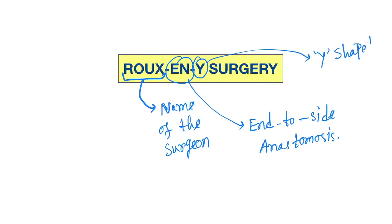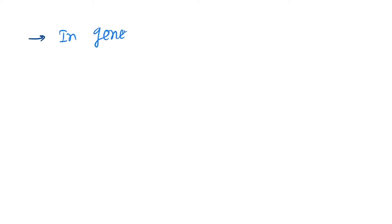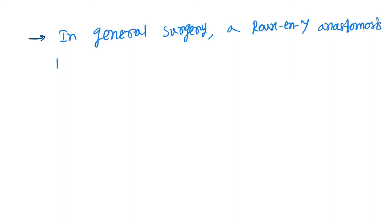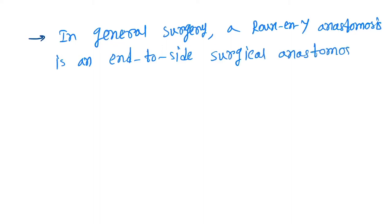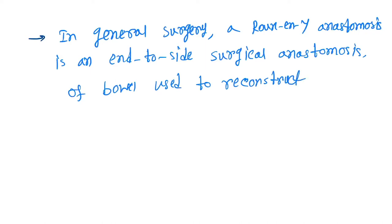Now let's write down the definition. In general surgery, a Roux-en-Y anastomosis is an end-to-side surgical anastomosis of bowel used to reconstruct the GI tract.